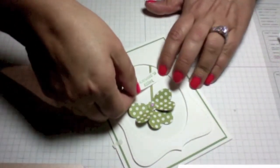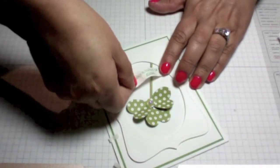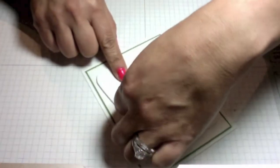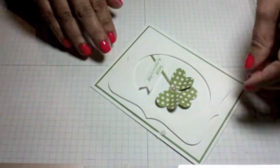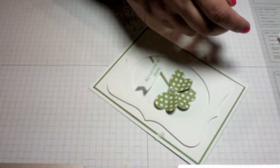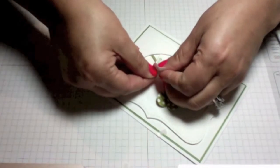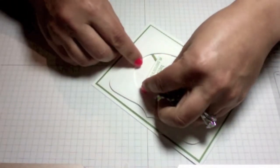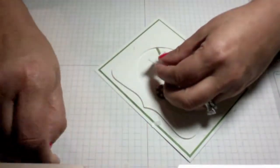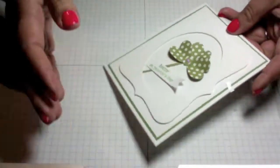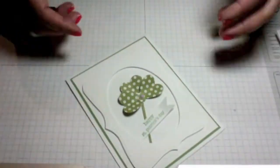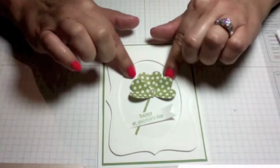You know what, I think I'm going to add a dimensional back here, so let me grab a dimensional really quick. There we go. So there you have a very simple card that you can easily create using some heart dies and also create your own fancy frames using a variety of dies.